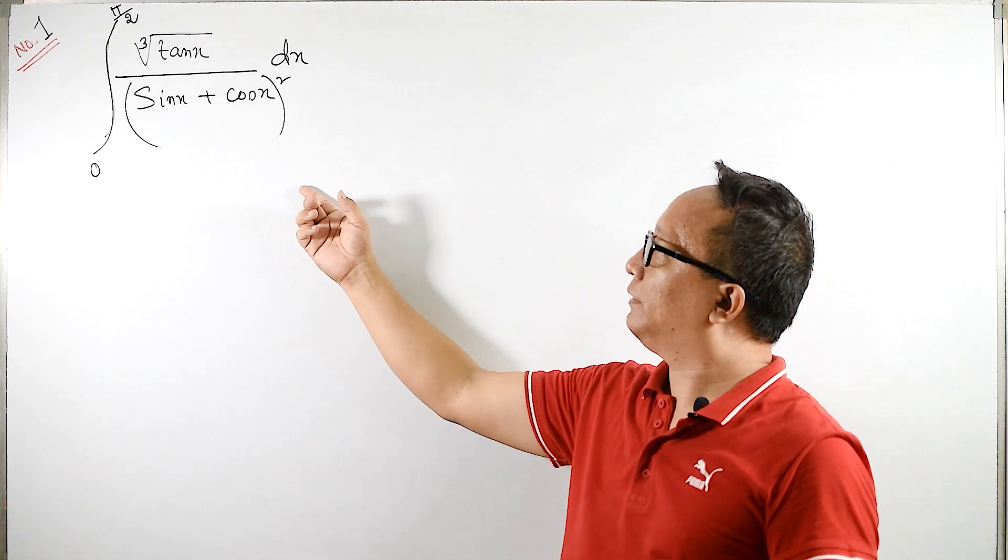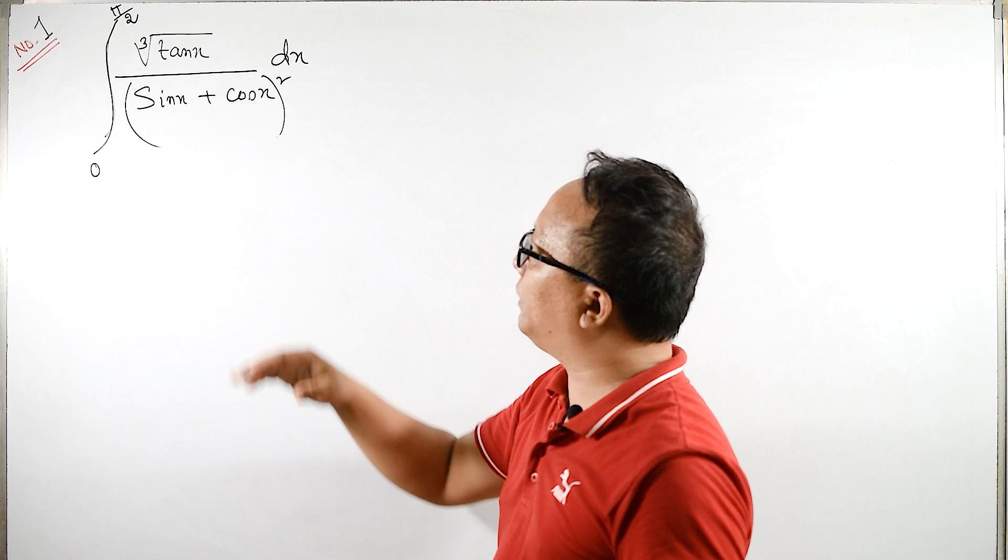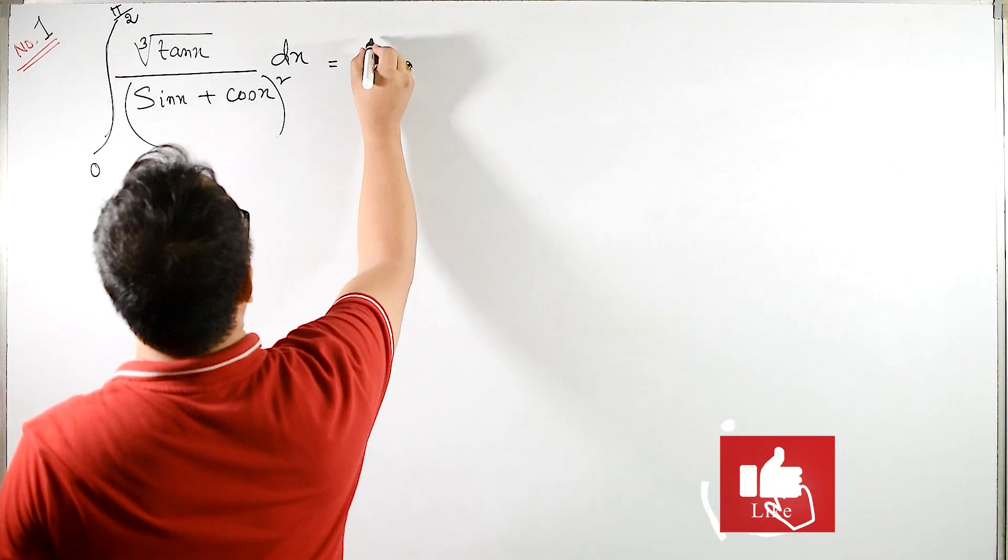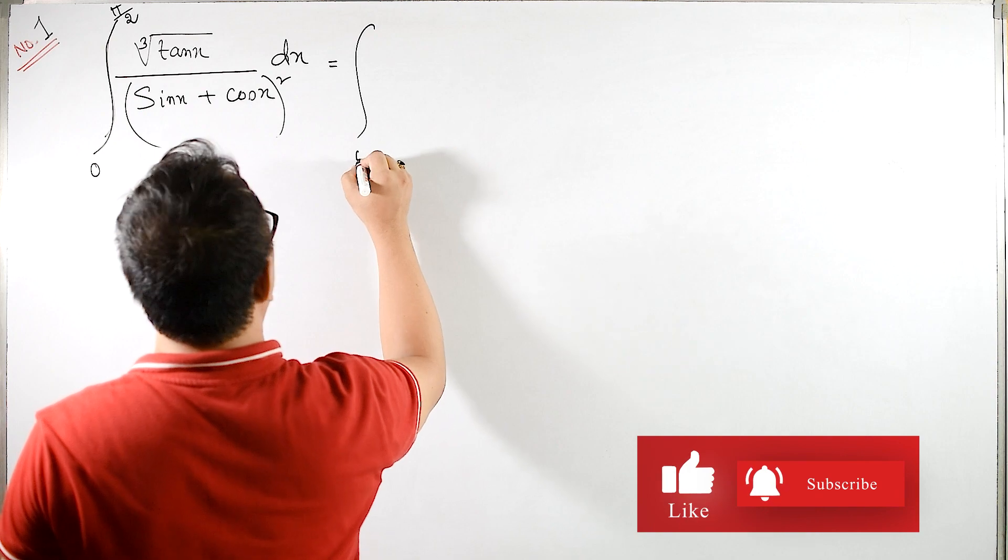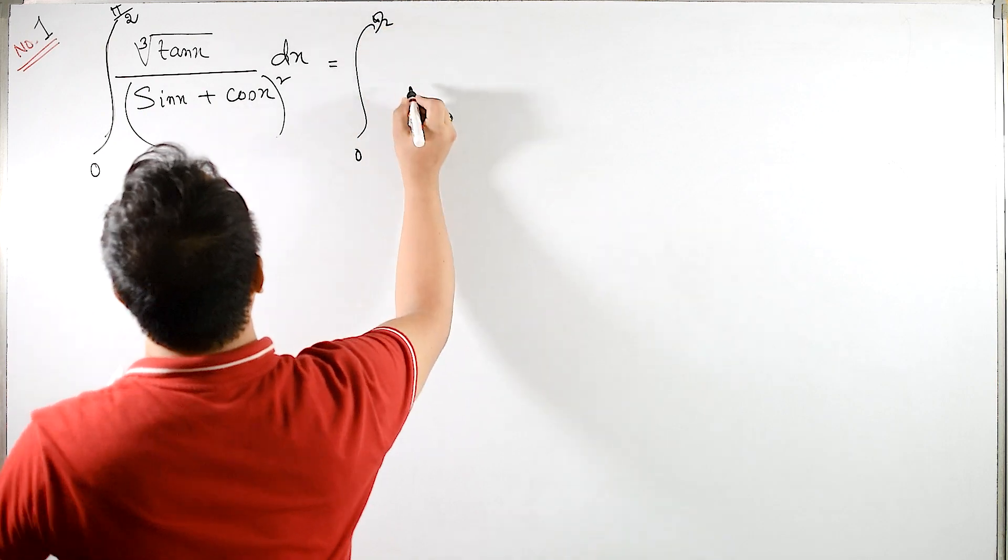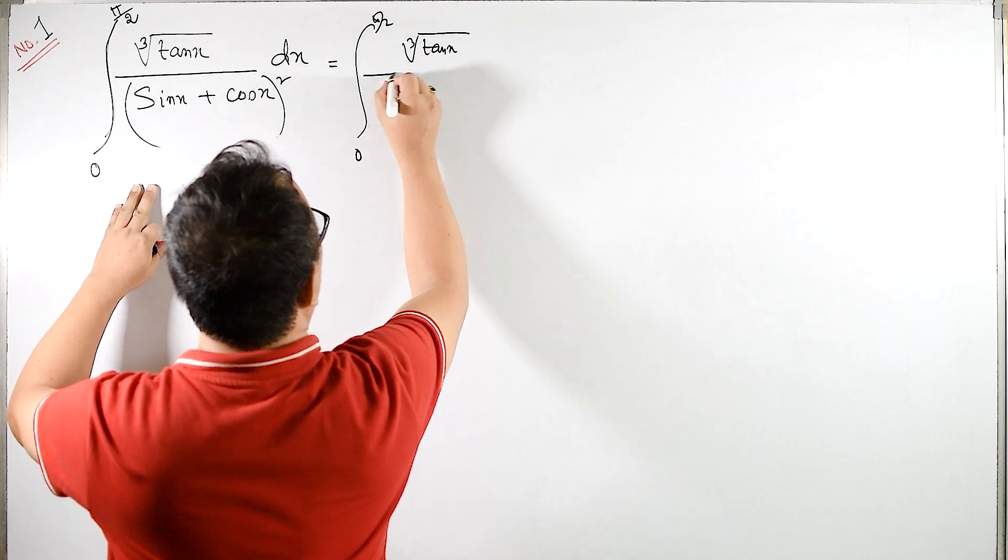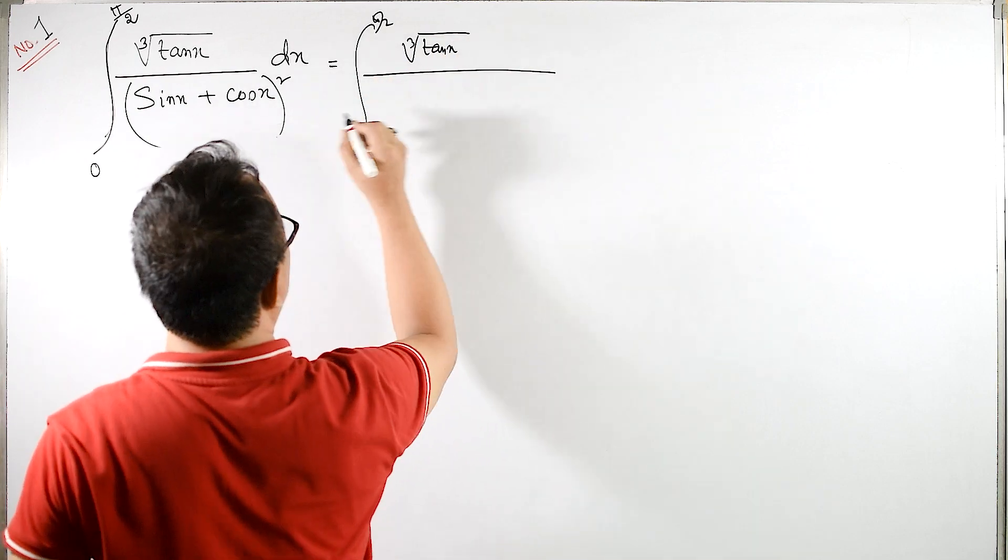In this integral, I will take sin x or cos x from the denominator. Let us see. This equals to integral from 0 to pi by 2, cube root of tan x upon cos x. Let us take cos x.